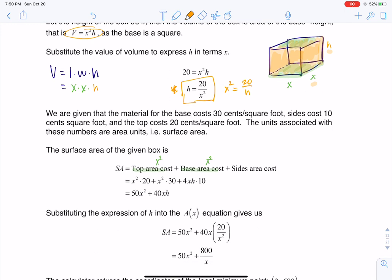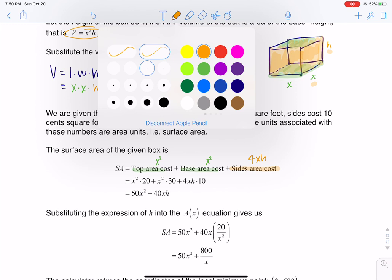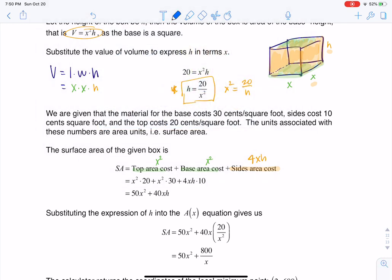So that's why when you see the side area cost, you see 4XH hanging out there. So these side areas are X times H. I have four of them, and then when we go put the money through on the sides, this was 10 cents per square foot. As we said before, the area for the base was 30 cents per square foot, and this one was 20 cents per square foot. So that's where you see this formula here coming into play.